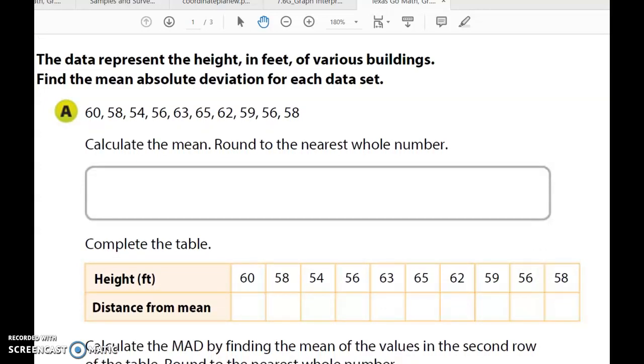So, I know that I have the data points 60, 58, 54, 56, 63, 65, 62, 59, 56, and 58. Now, the question in class today, do we have to actually put this in order from least to greatest? As we would with a lot of the other measures of central tendency in order to calculate them properly? And the answer is no at this point. We do not have to do that.